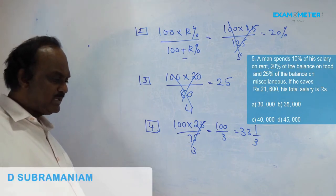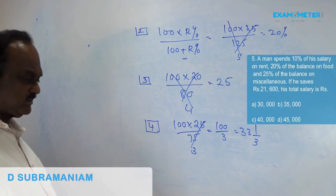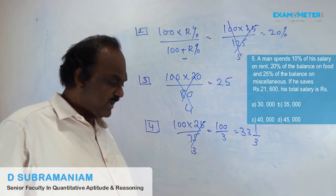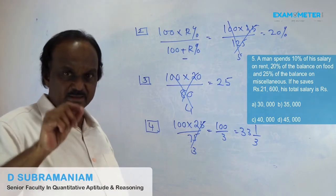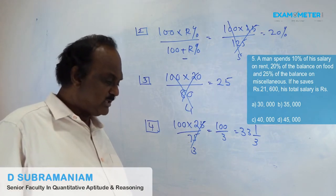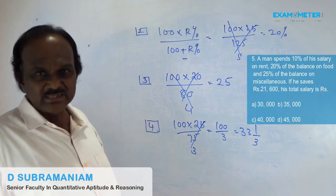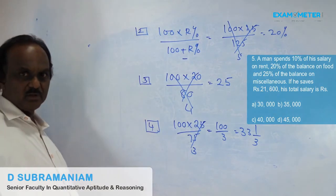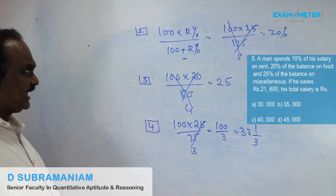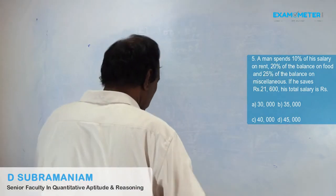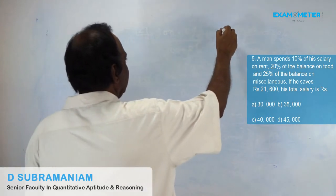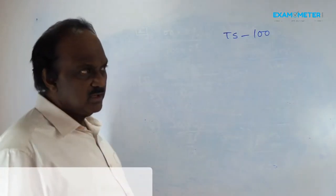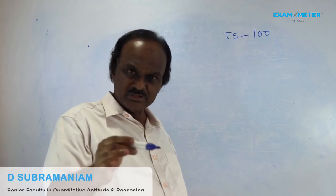Question number 5: A man spends 10% of his salary on rent, 20% of the balance on food — underline balance — and 25% of the balance on miscellaneous — underline balance. If he saves Rs. 21,600, his total salary is? In this problem we have to find out the total salary. Total salary we will take as 100. Any percentage problem — start with 100.